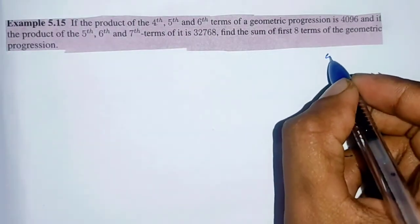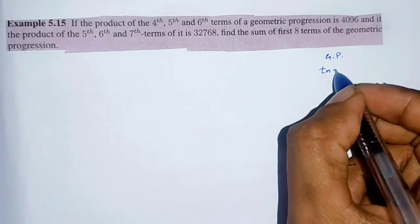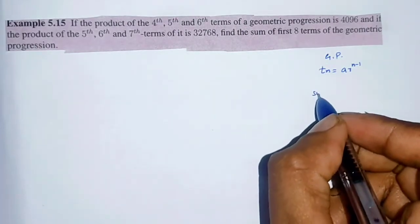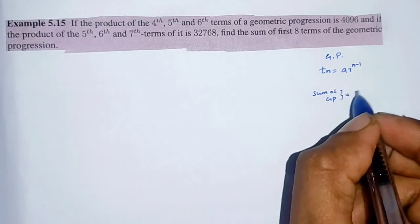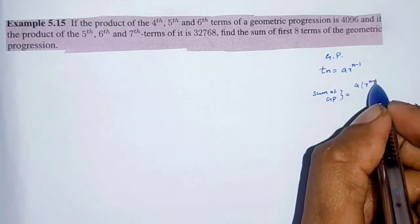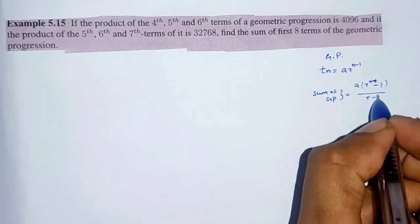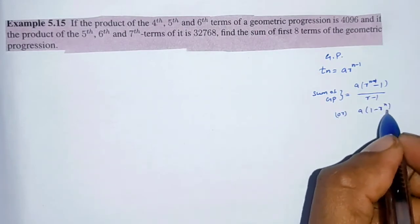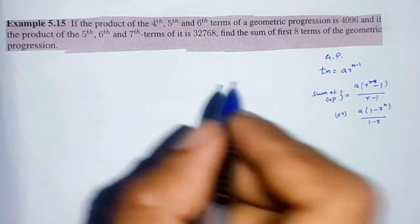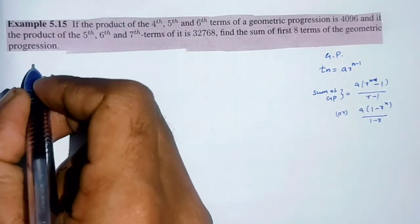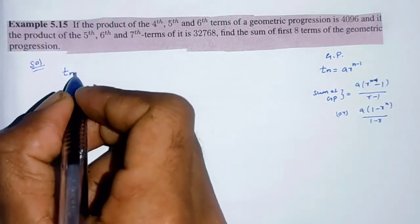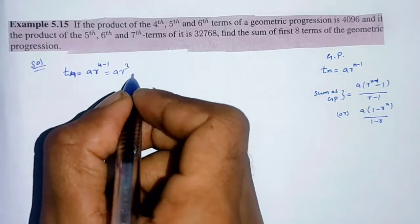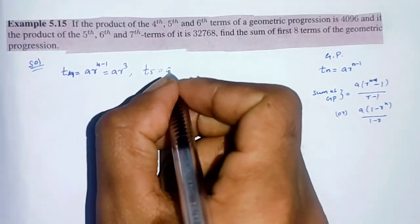First, we know the general term of a geometric progression: t_n = a·r^(n-1). Next, we know the sum of n terms formula: S = a(r^n - 1)/(r - 1), which can also be written as a(r^n - 1)/(1 - r).